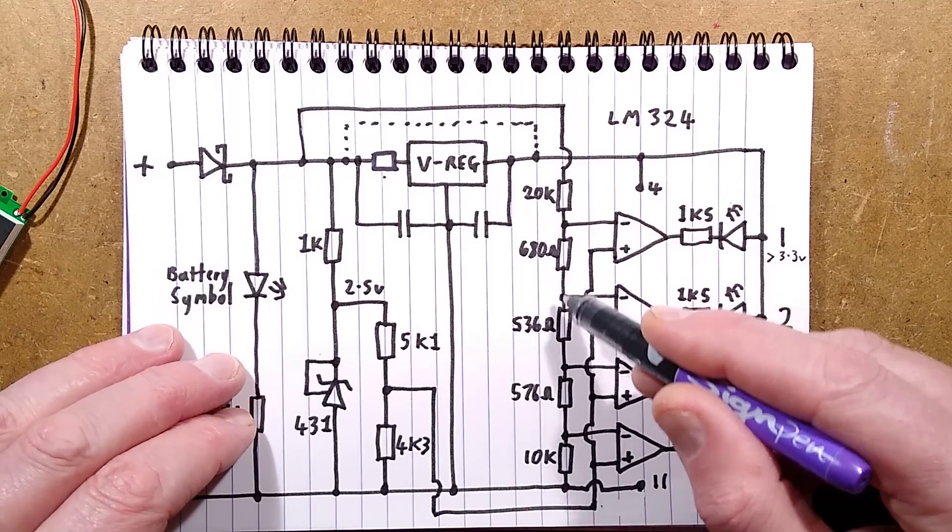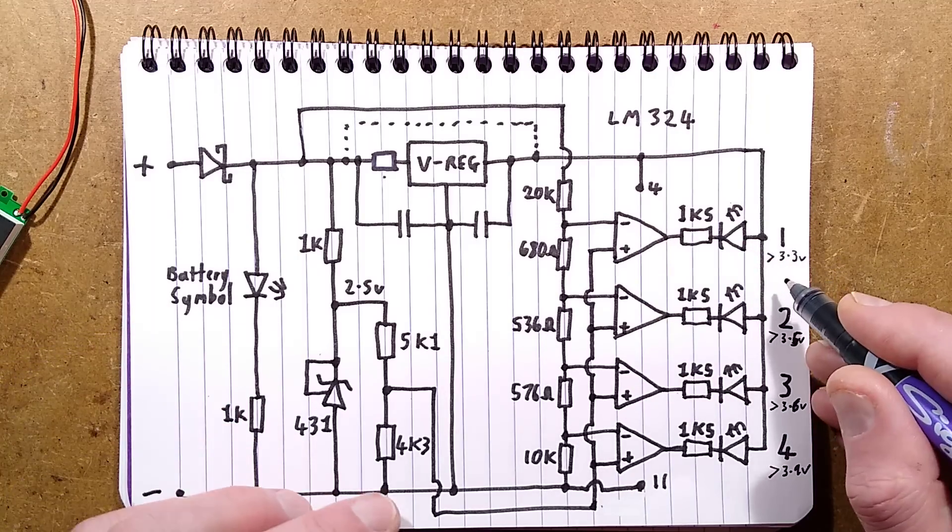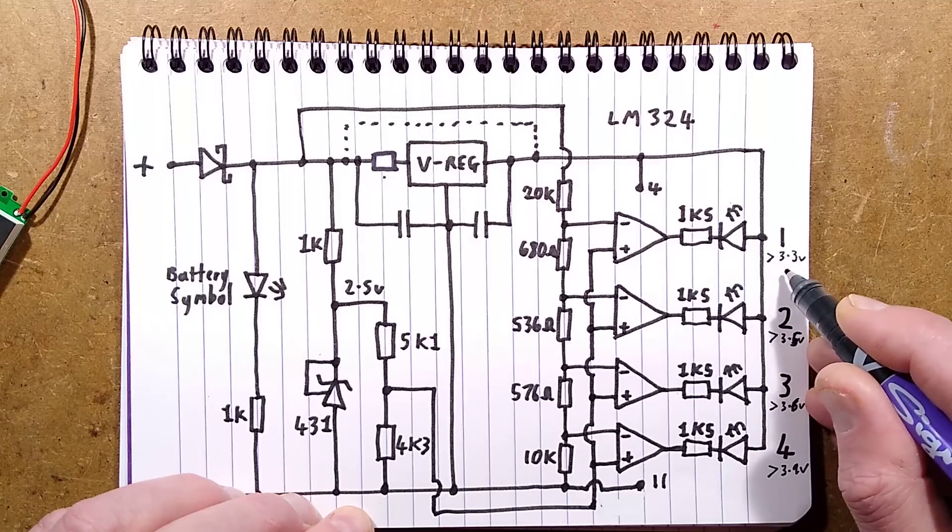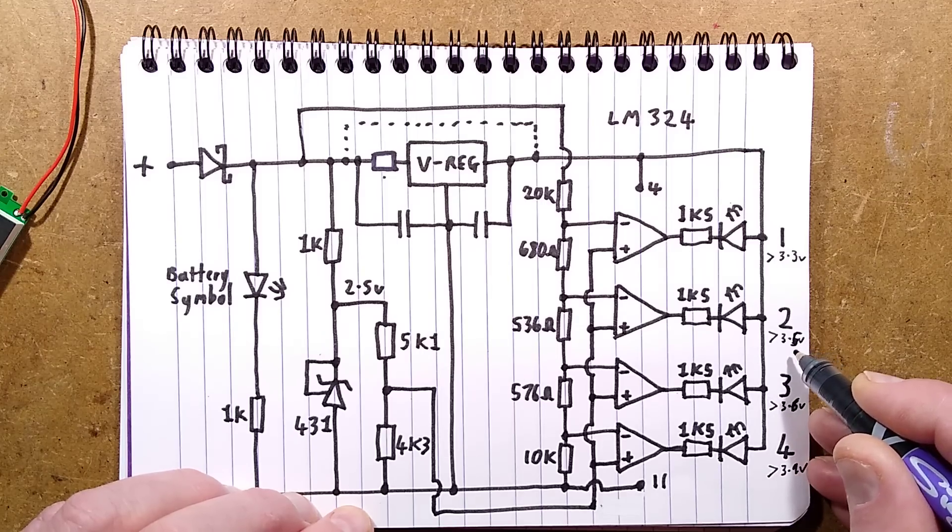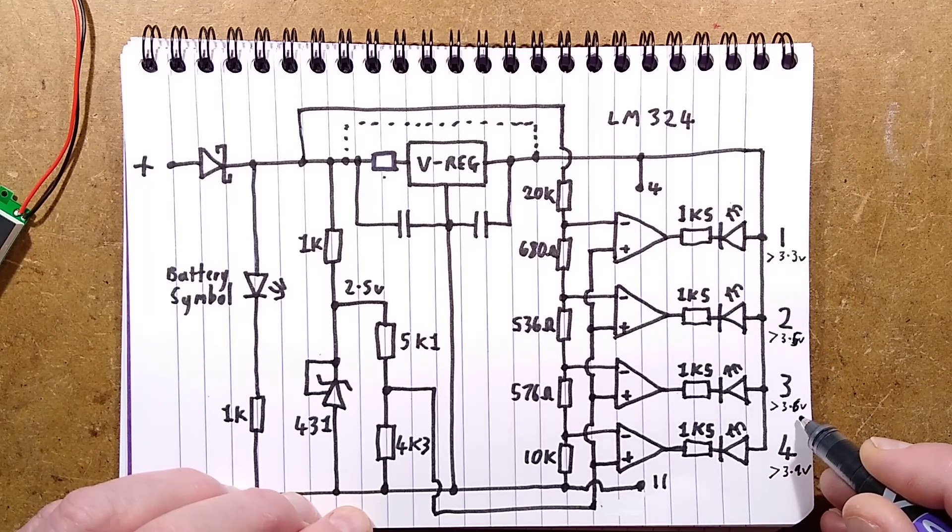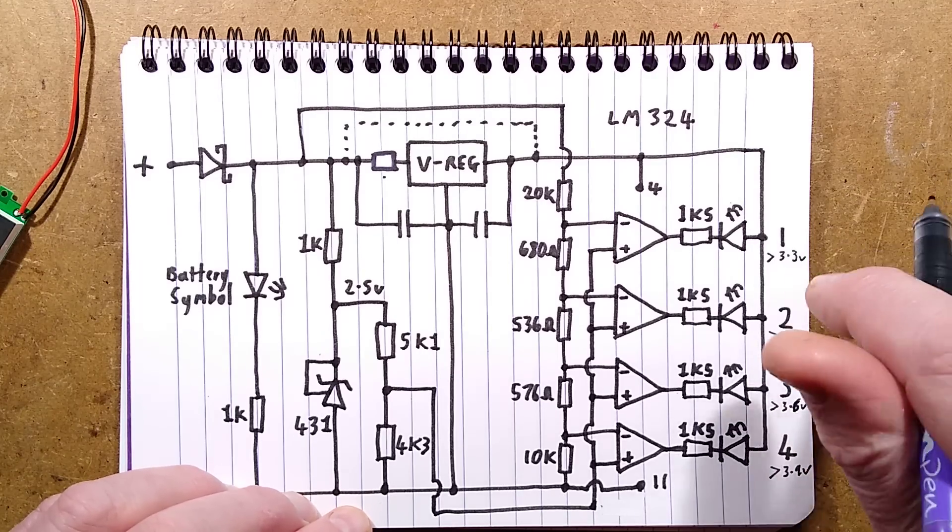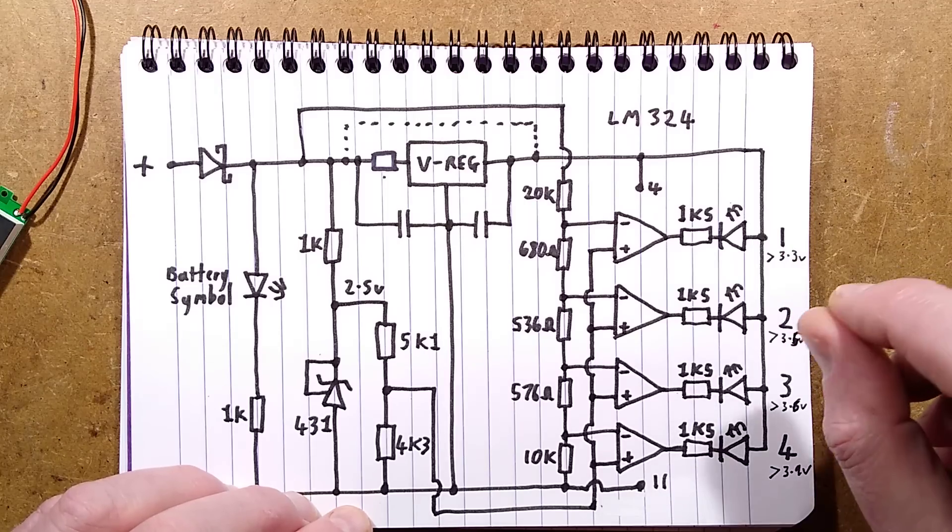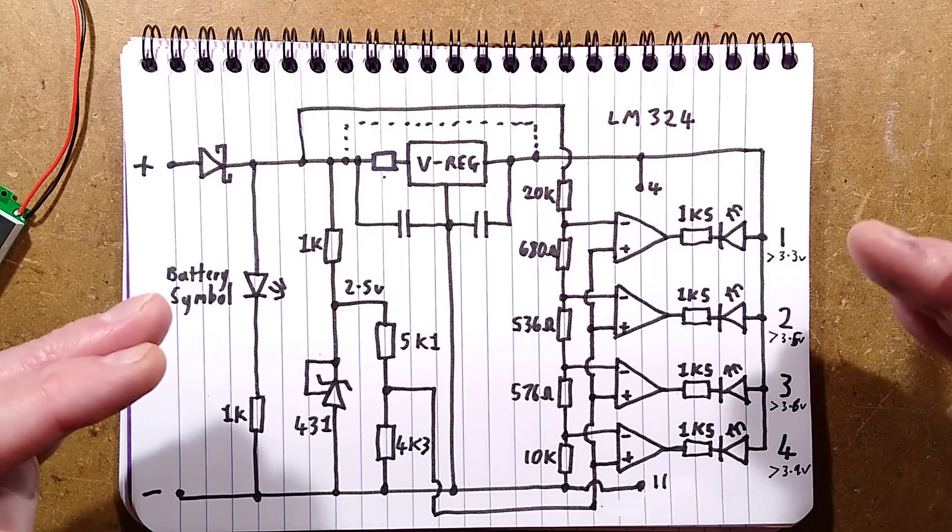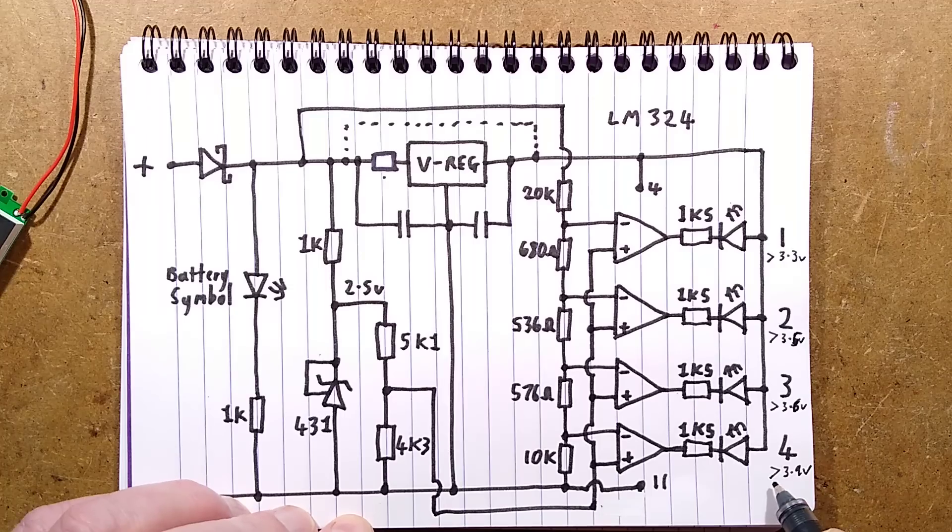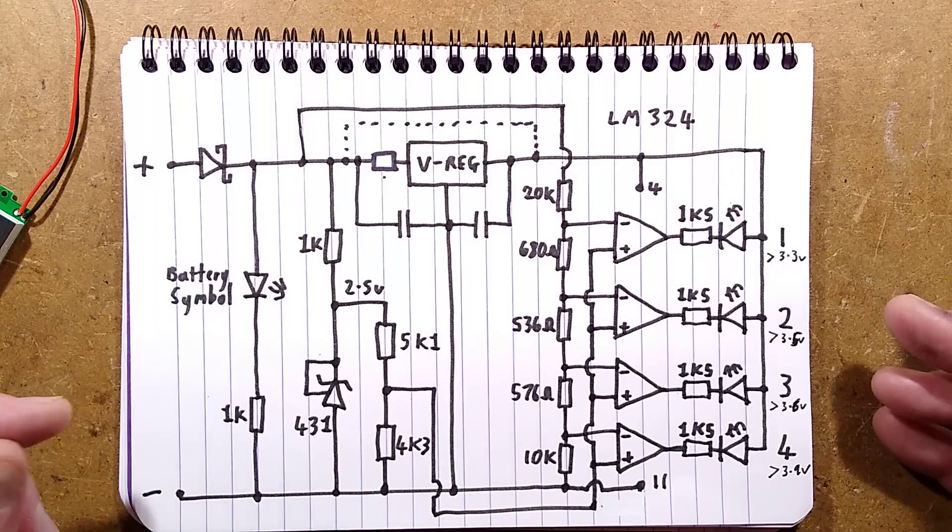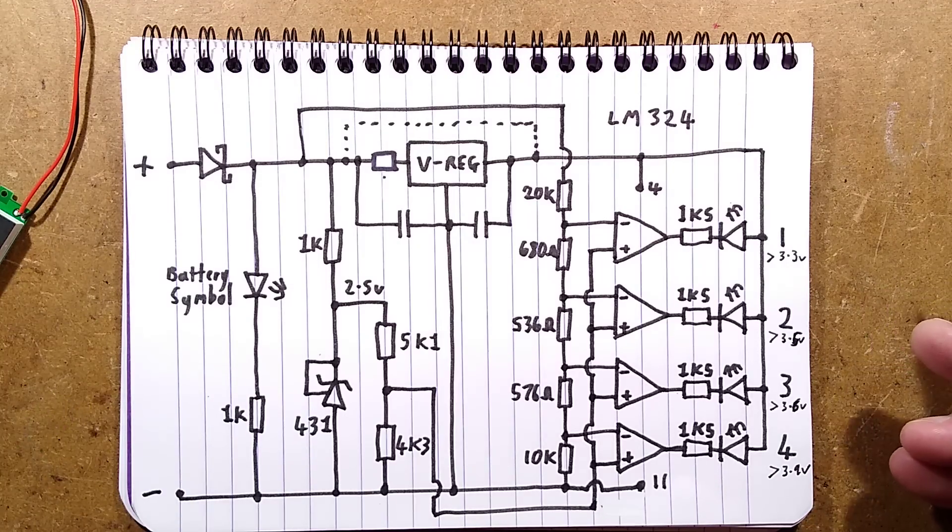We get the divider here and it's set so that the first LED lights above 3.3 volts, the second LED lights above 3.5 volts, the third very close at 3.6 volts. I don't know if this is just because the increments on my power supply are quite big compared to the tiny variation of voltage of a discharging lithium cell. The fourth LED for fully charged shows above 3.9 volts which is reasonable enough, that's about 80% or more.